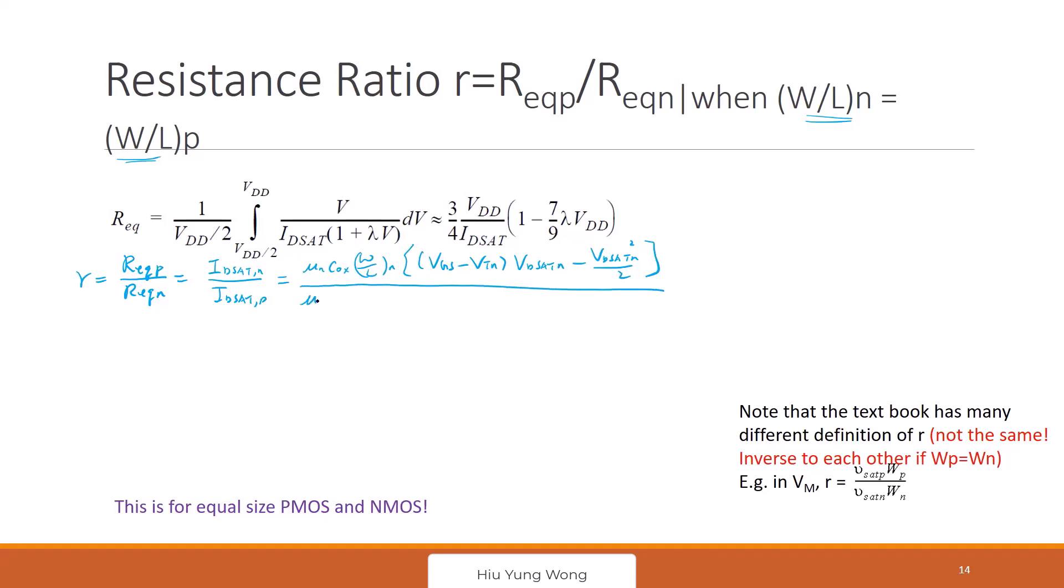And then how about for P? μP COX. I just copy, nothing special. Copy the same equation. Of course here I have VSG plus VTP. This time I did not use the absolute value. VDSAT P minus VDSAT P squared divided by two.